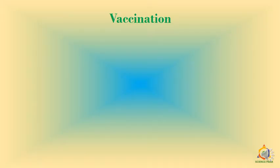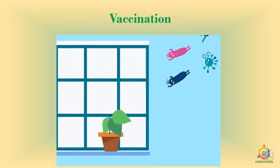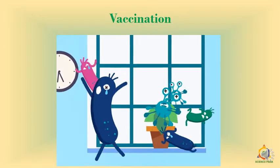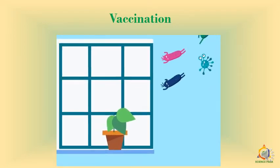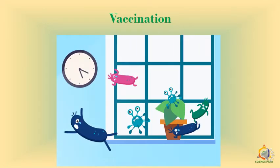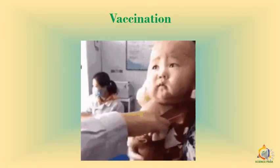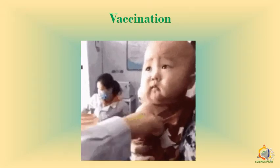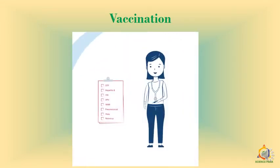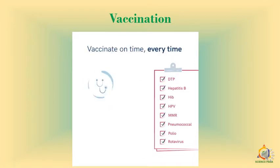Let us start with vaccination. When germs attack us, all of us do not get the disease because our immune system fights with these germs. When our immune system is weak, we may get that disease. After the baby is born, it is given the tuberculosis vaccine. When the baby is 1.5 months old, it is given vaccination against diphtheria, whooping cough, tetanus, and polio.